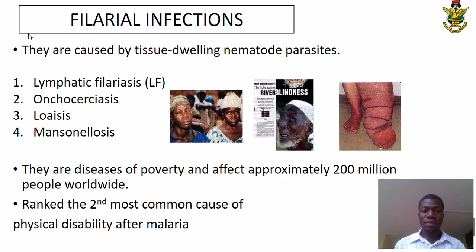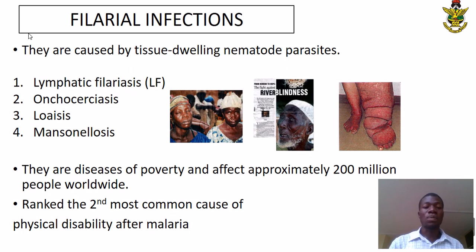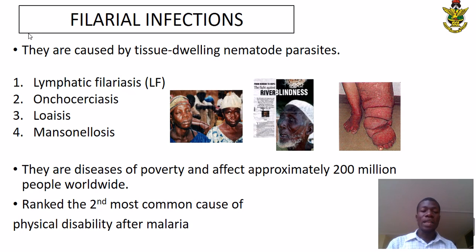Filarial infections are caused by tissue-dwelling nematode parasites. Depending on the type and location of the adult worms, they may elicit one of the following infections: namely lymphatic filariasis, onchocerciasis, loiasis, and mansonellosis. These are diseases of poverty and affect approximately 200 million people worldwide.